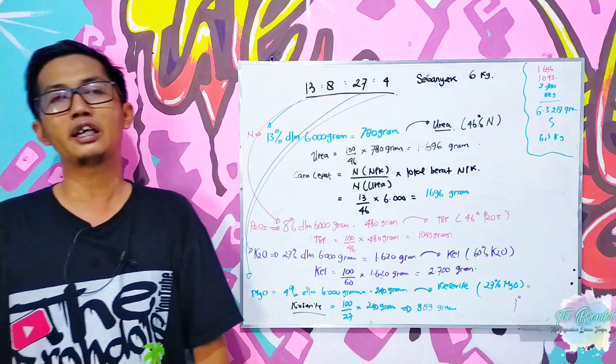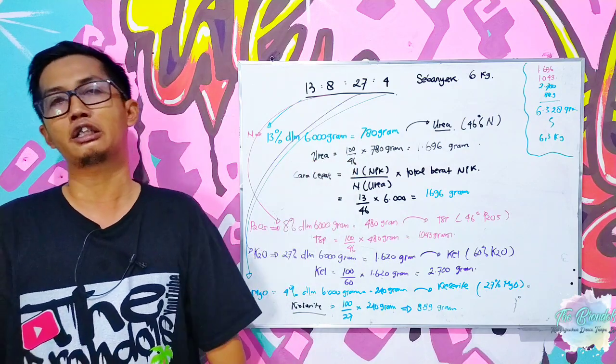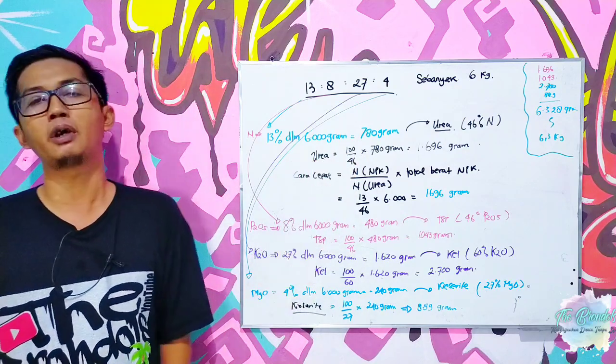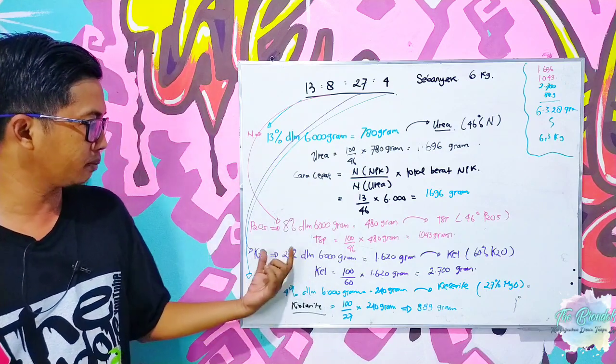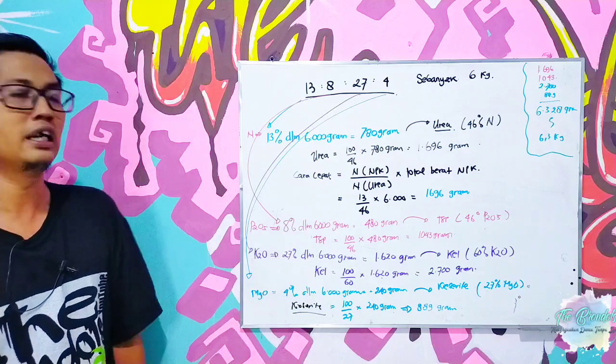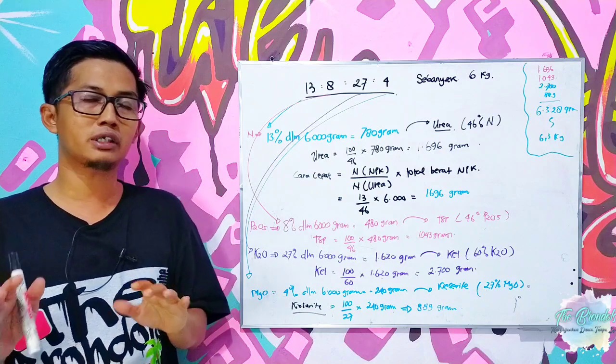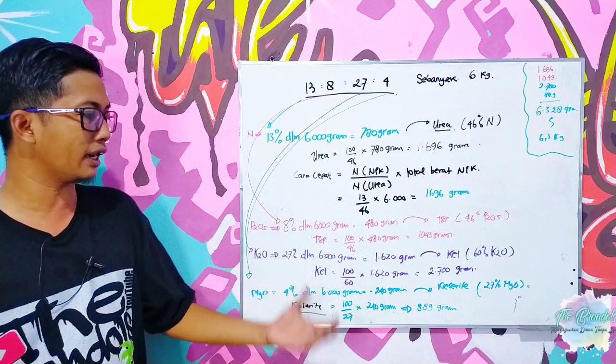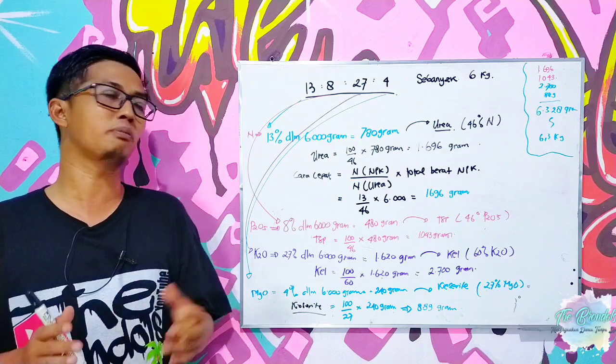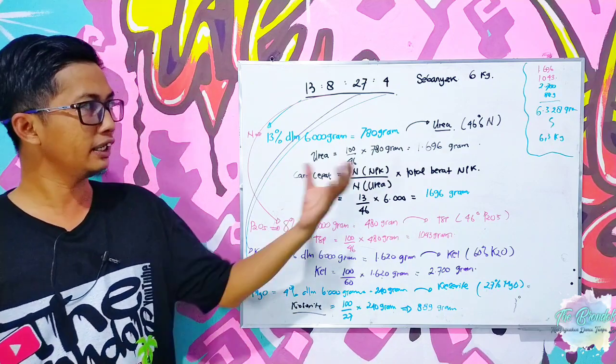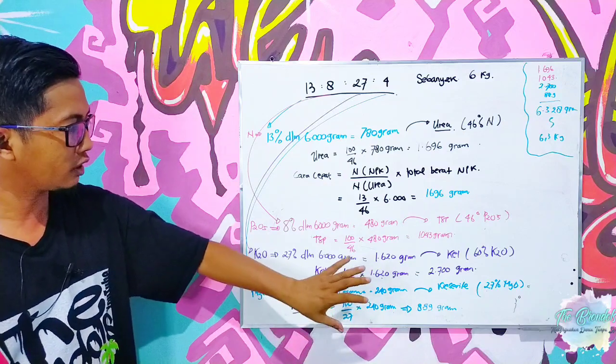Urea sebagai sumber unsur hara nitrogen, kemudian TSP sebagai sumber pospatnya atau P2O5-nya, KCL sebagai sumber K2O, dan kiserit sebagai magnesium oksidanya. Namun bahwa sebelum kita melakukan pencampuran ini, alangkah baiknya para planter dan para petani juga memahami karakter dasar dari pupuk-pupuk tunggal ini.